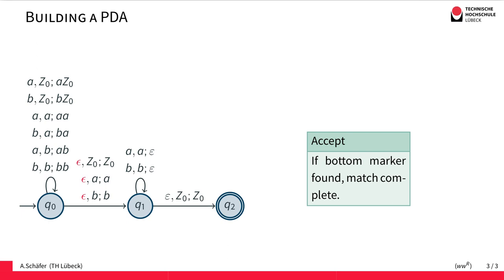So actually the only difference compared to the previous example is that we make this transition from Q0 here to Q1 non-deterministically using this epsilon transition, because we could either continue with the A's and B's pushing them onto the stack or we can take the epsilon transition and start the matching.